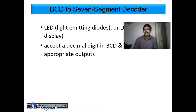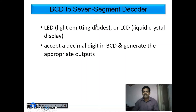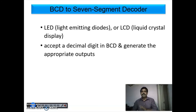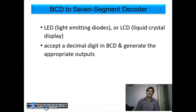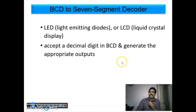Next: BCD to 7-segment display decoder — we have to implement it using PLA. Whatever combinational circuit problem the exam asks you to implement using PLA, the approach is the same. A 7-segment display is present in LED and LCD displays; it accepts a decimal digit in BCD and generates the appropriate outputs for segments A, B, C, D, E, F, G.